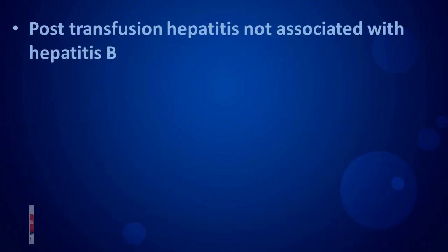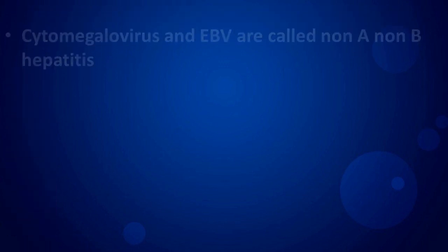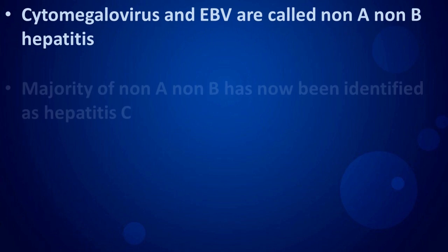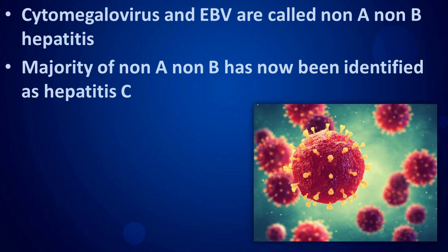Viral hepatitis is another very important pathological complication which could be caused by blood transfusion. Post-transfusion hepatitis not associated with Hepatitis B includes Cytomegalovirus and Epstein-Barr virus, and these are called non-A, non-B hepatitis. The majority of non-A, non-B hepatitis has now been identified as Hepatitis C.